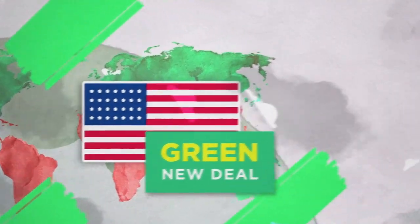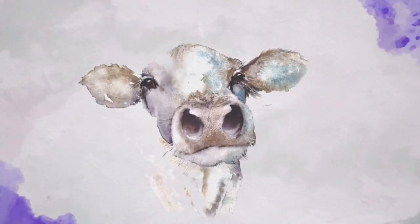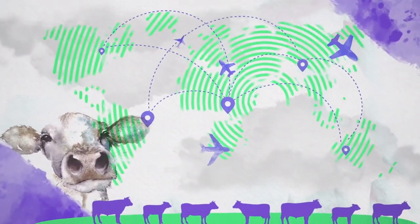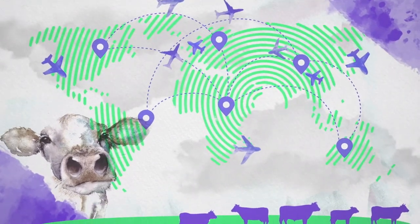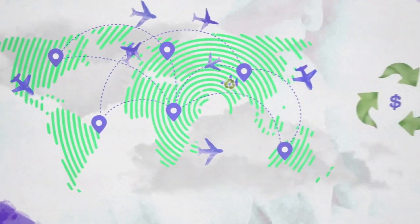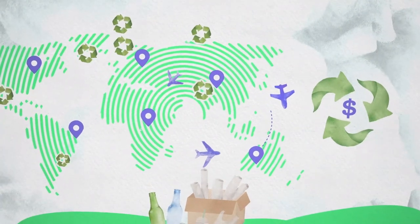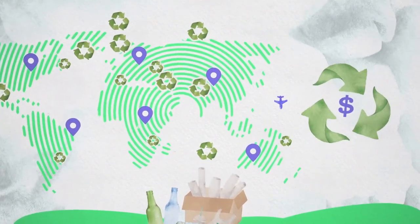Two important sectors that are going to be increasingly affected by climate change in these regions are agriculture and tourism. Developing countries depend on these sectors to make a living. Thinking of ways to deal with these challenges in a sustainable, but still economically viable way is crucial.